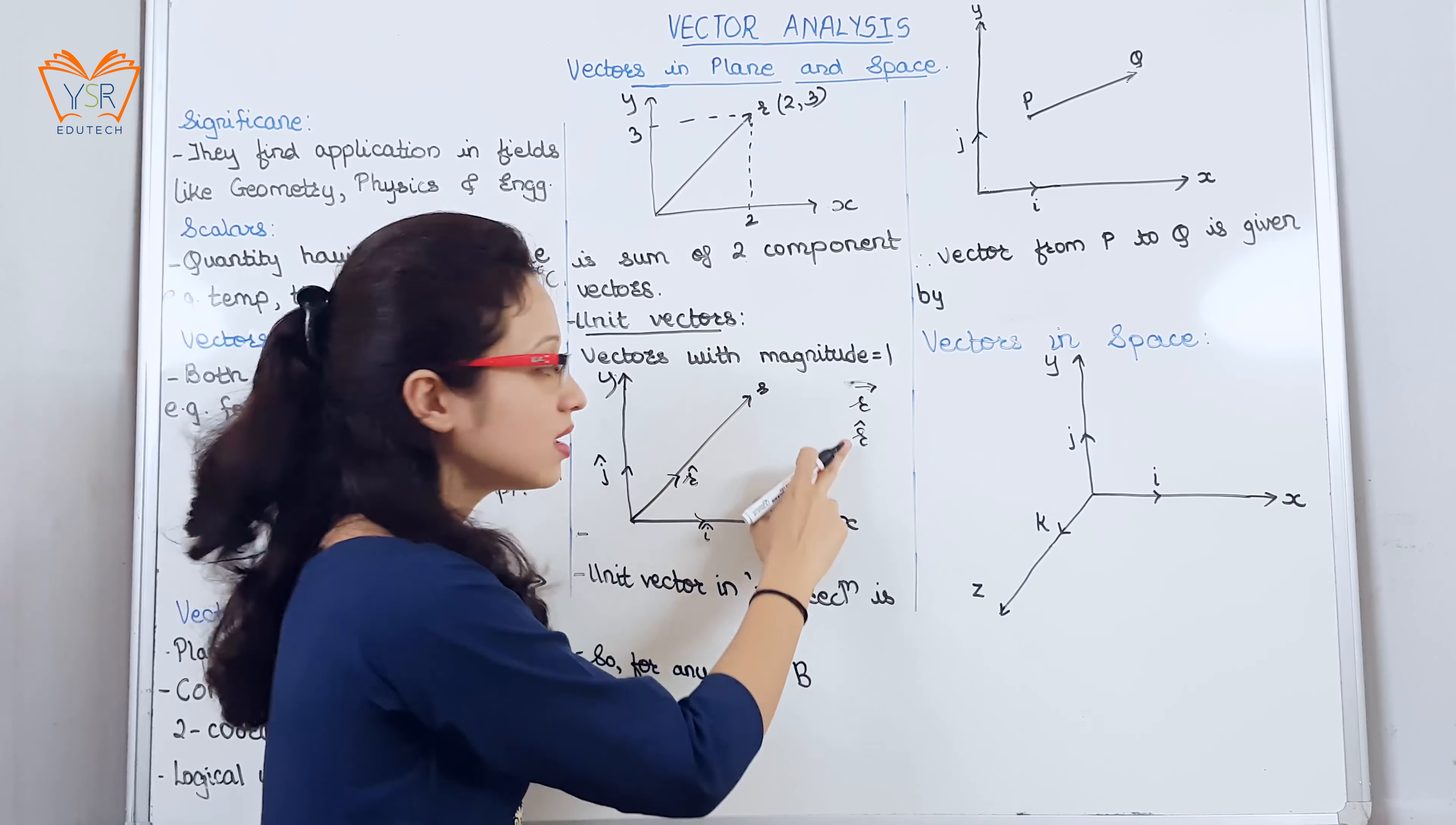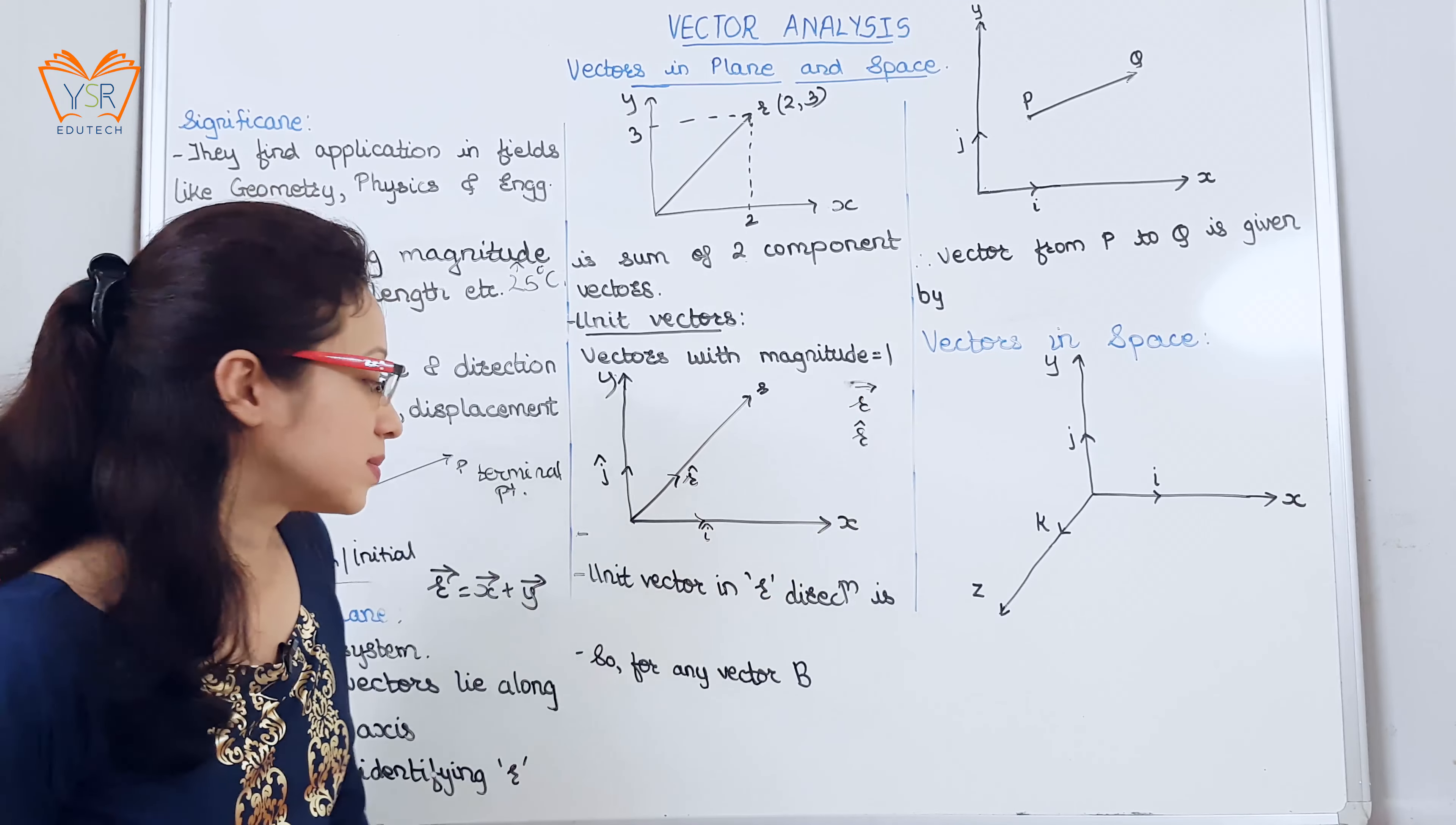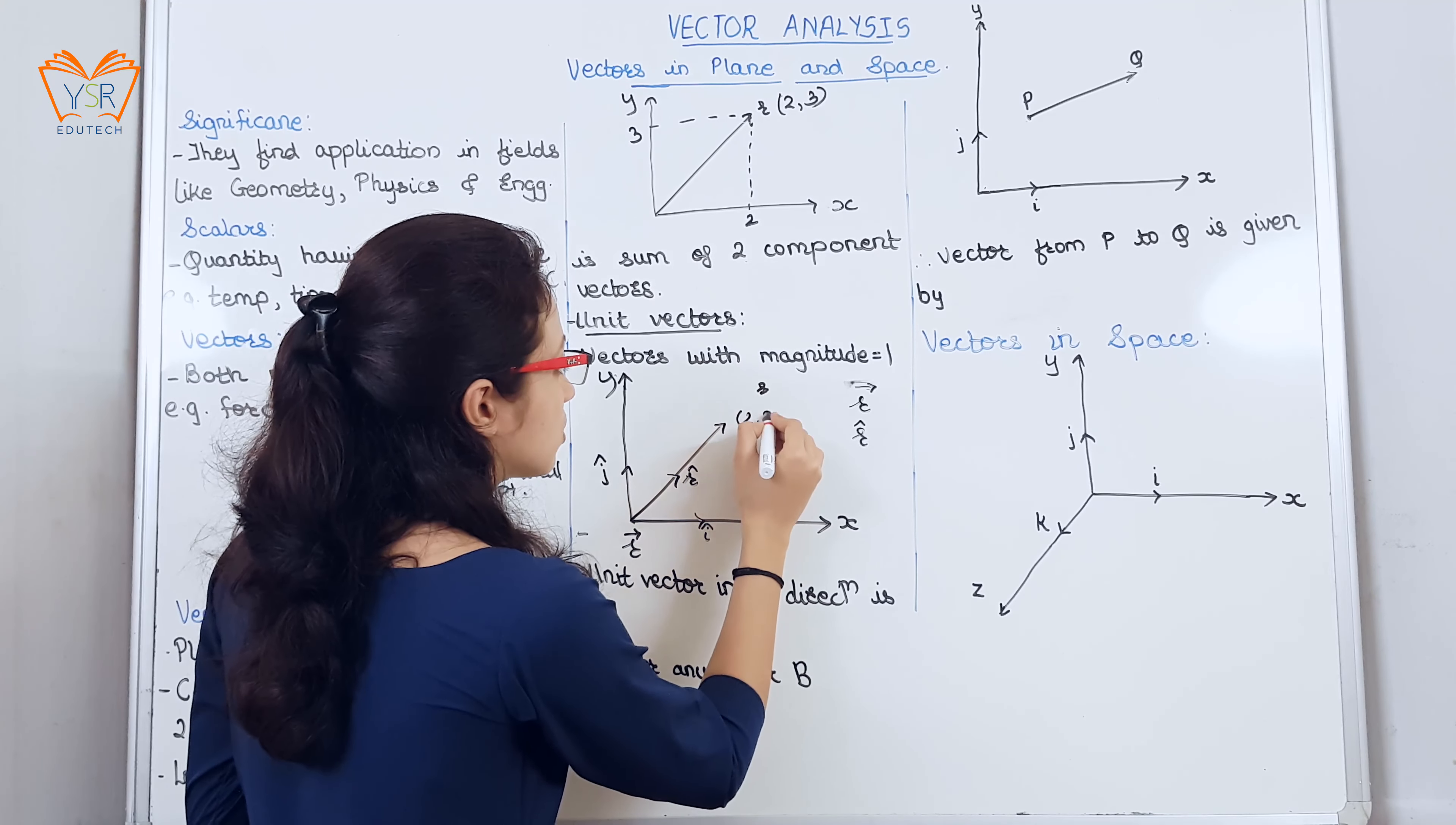Arrow indicates vector, the cap indicates the unit vector. As the unit vector has magnitude equal to 1, unit vector basically gives the direction. So, we will consider this was 2 comma 3.